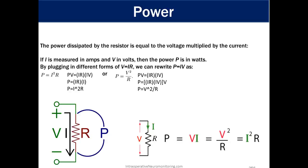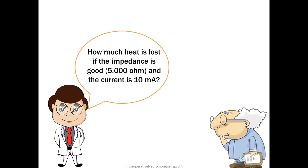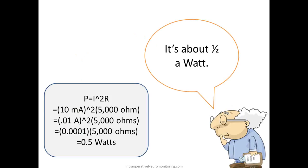Power. The power dissipated by the resistor is equal to the voltage multiplied by the current. So if intensity is measured in amps and volts and MV and volts, then the power is in watts. By plugging in different forms of Ohm's law, we can rewrite Ohm's law is power equals I over V. And from there, when they give you specific information, you can use that equation to further figure things out where P equals I squared over R or P equals V squared over R. How much heat is lost if the impedance is good or 5,000 ohms and the current is 10 milliamps? So go ahead and pause the video and see if you can figure that out. Okay. It is about half a watt. So if power equals intensity squared times R, then 10 milliamps squared times 5,000 ohms or 0.01 amperage squared times 5,000 or 0.0001 times 5,000 is 0.5 watts.